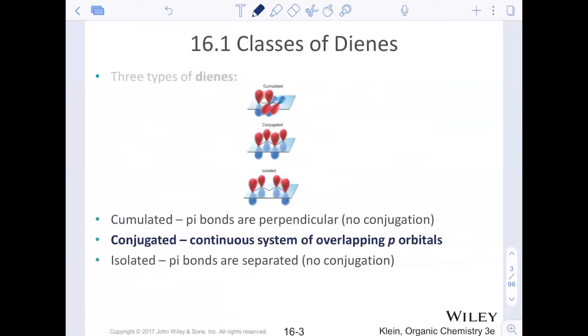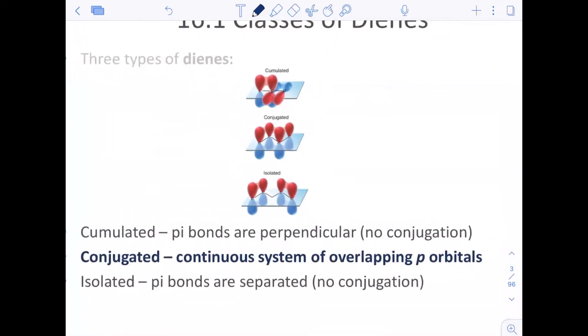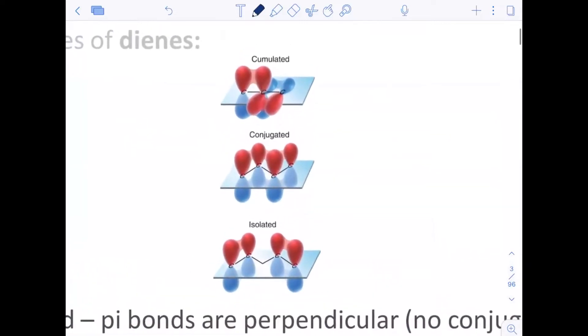Now out of these we can see how the conjugated system is a continuous system of overlapping p orbitals. If I just kind of zoom in here, cumulated because of that central carbon being sp hybridized. Remember pi bonds are, if they exist on the same carbon, that central carbon has to have pi bonds that are 90 degrees from each other because that's where we get the p orbital. The x, the y, and the z plane of the p orbitals are all 90 degrees from each other. So there's no resonance there. Pi bonds are perpendicular and so there's no conjugation. There's no resonance between those two cumulated pi bonds.